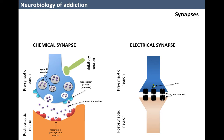To produce their effects, chemical messengers bind to cellular receptors. This binding property is known as affinity, while efficacy refers to their capacity to generate physiological effects. Agonist substances have high affinity and high efficacy, while antagonist substances have high affinity and low efficacy.